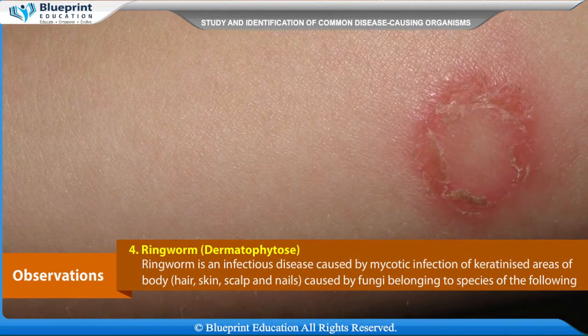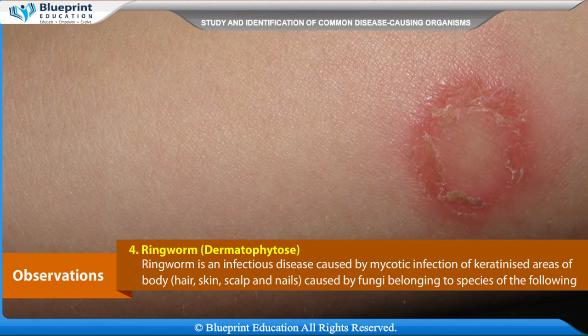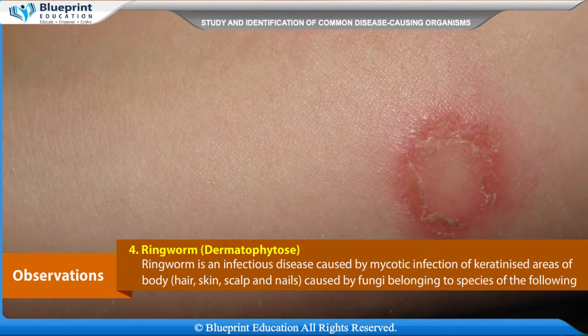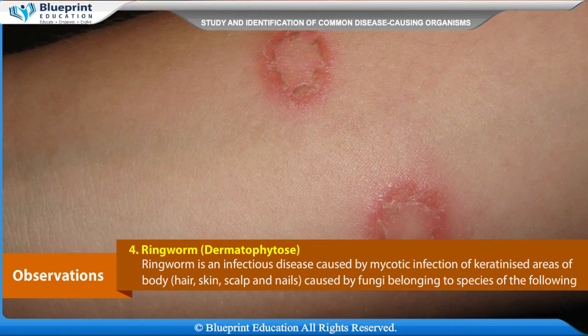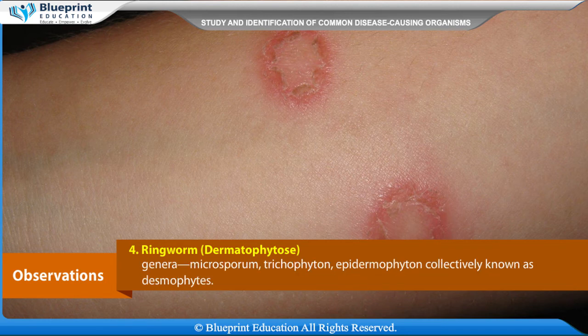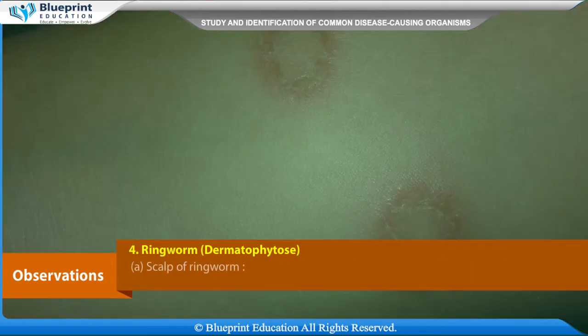Ringworm (dermatophytosis) is an infectious disease caused by mycotic infection of keratinized areas of the body — hair, skin, scalp, and nails. It is caused by fungi belonging to the genera Microsporum, Trichophyton, and Epidermophyton, collectively known as dermatophytes.